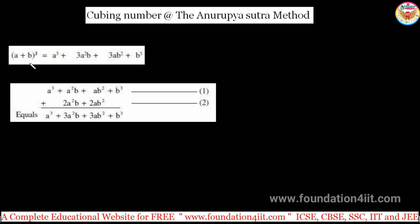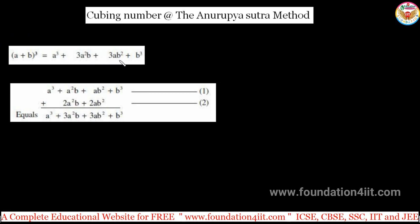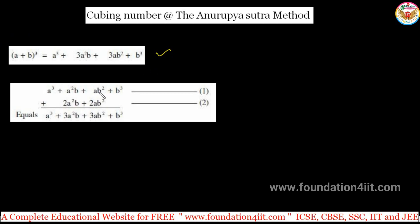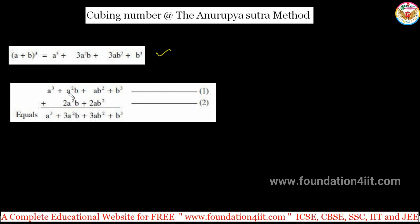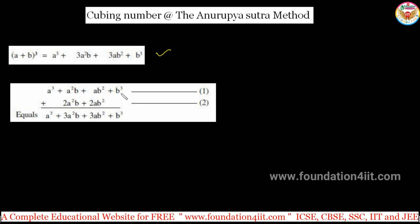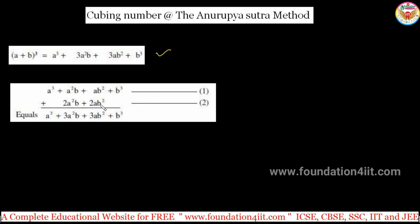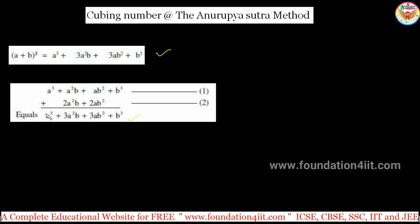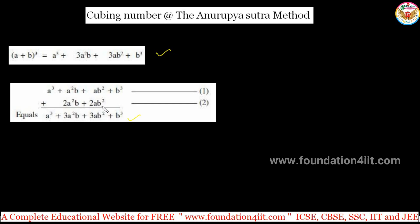We have the formula: (a + b)³ = a³ + 3a²b + 3ab² + b³. The same formula can be written as two equations: a³ + a²b + ab² + b³, and then 2a²b + 2ab². By adding these two equations together, we get the original formula — this is the foundation of the method.